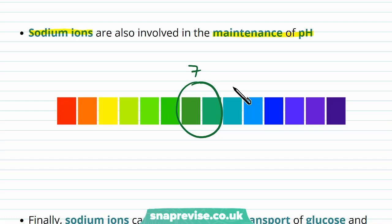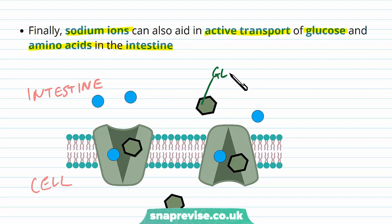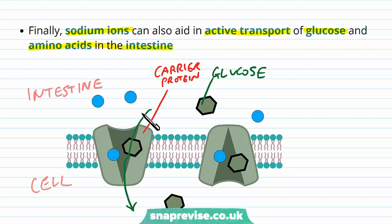Finally, sodium ions are used in active transport, particularly for glucose and amino acids in the intestine. In the lumen of the intestine, in order to absorb glucose molecules, we have to absorb sodium with it through a particular carrier protein. The carrier protein lies in the membrane of the cell and takes glucose from one side to the other. However, sodium ions have to be taken through with the carrier protein along with the glucose — without this, the glucose can't be absorbed. The same applies to amino acids, so sodium is important in getting a lot of our food into cells.